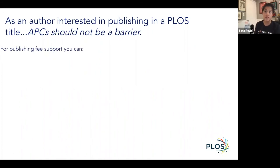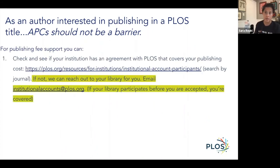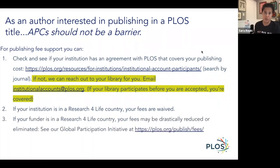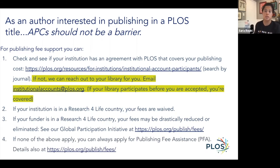The first place to check is to see if your institution has an agreement with us. If they do, that means your institution is supporting your publication fees, and ideally you will not be paying anything as a corresponding author. If you are in a Research for Life country, you will not be paying any fees. If your funder is in a Research for Life country, you may be eligible for a reduction or waiver in your fees. And if none of those apply to you, you can always apply for publication fee assistance through our PFA program, which is a waiver program. So we're not 100% away from waivers, but we are working on it with these three new models.